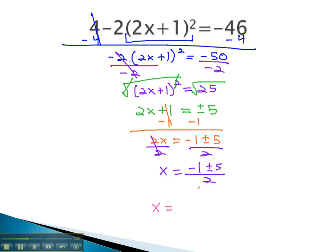We can then find x by considering our two possibilities, one from the plus and one from the minus. -1 + 5 is 4 over 2, and -1 - 5 is -6 over 2. Both those fractions reduce to give us our solutions 2 and -3 to this equation.